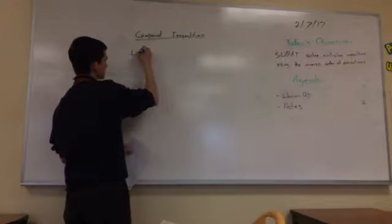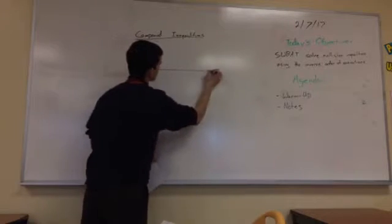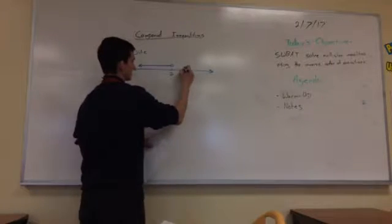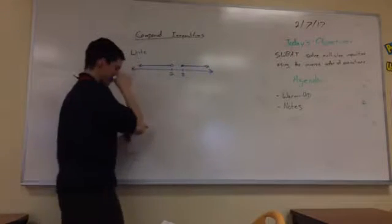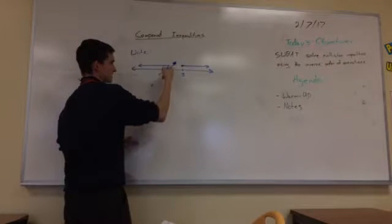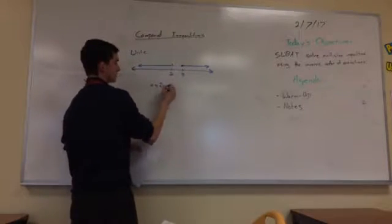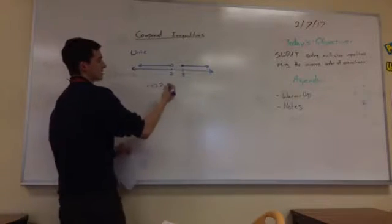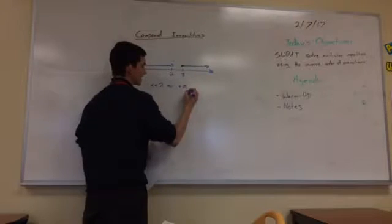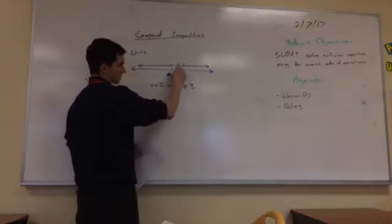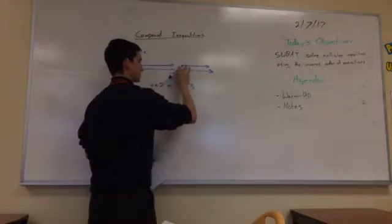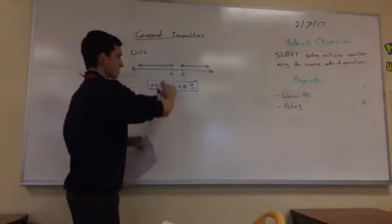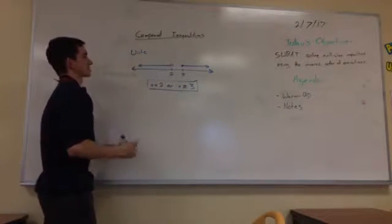Now I'm going to write the inequality for a given graph. At 2, it has an open dot and it's going to the left. At 3, it has a closed dot and it's going to the right. So the inequality looks like this: x is less than 2 — strictly smaller, no equal sign, because it's an open dot. Or x is greater than or equal to 3 — the equal to is there because of the closed dot on 3, and we're pointing to all numbers bigger than 3. It's in two pieces on the graph, so I'm going to write it as two separate inequalities.